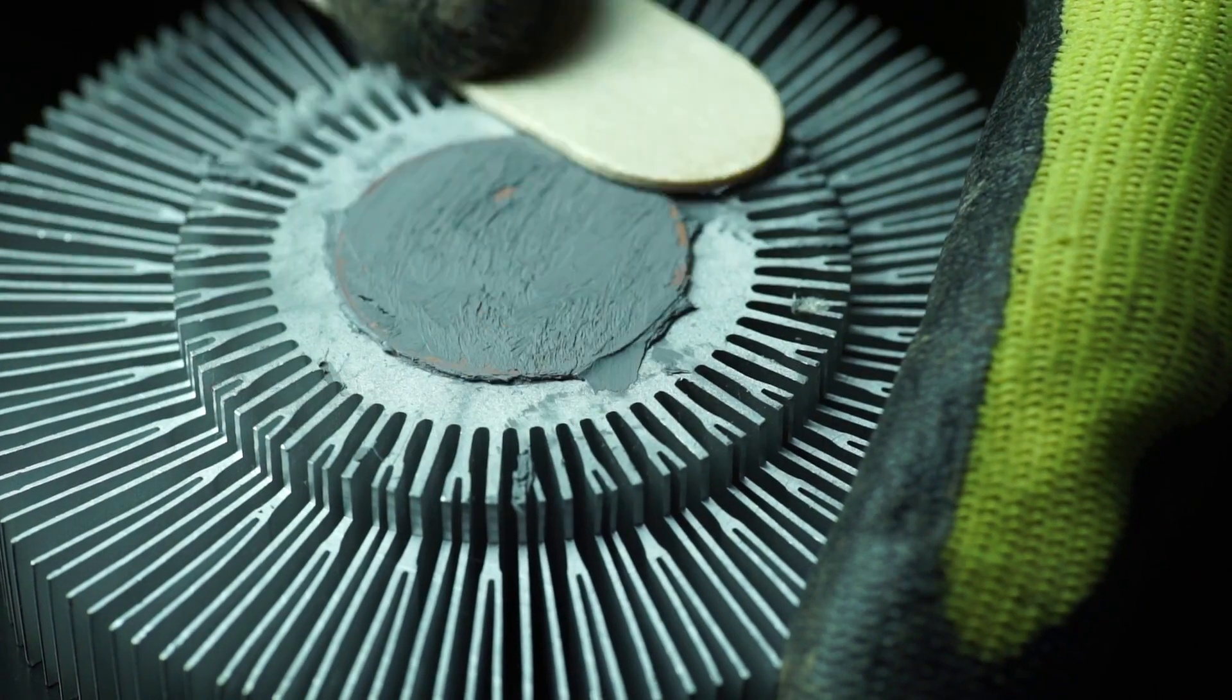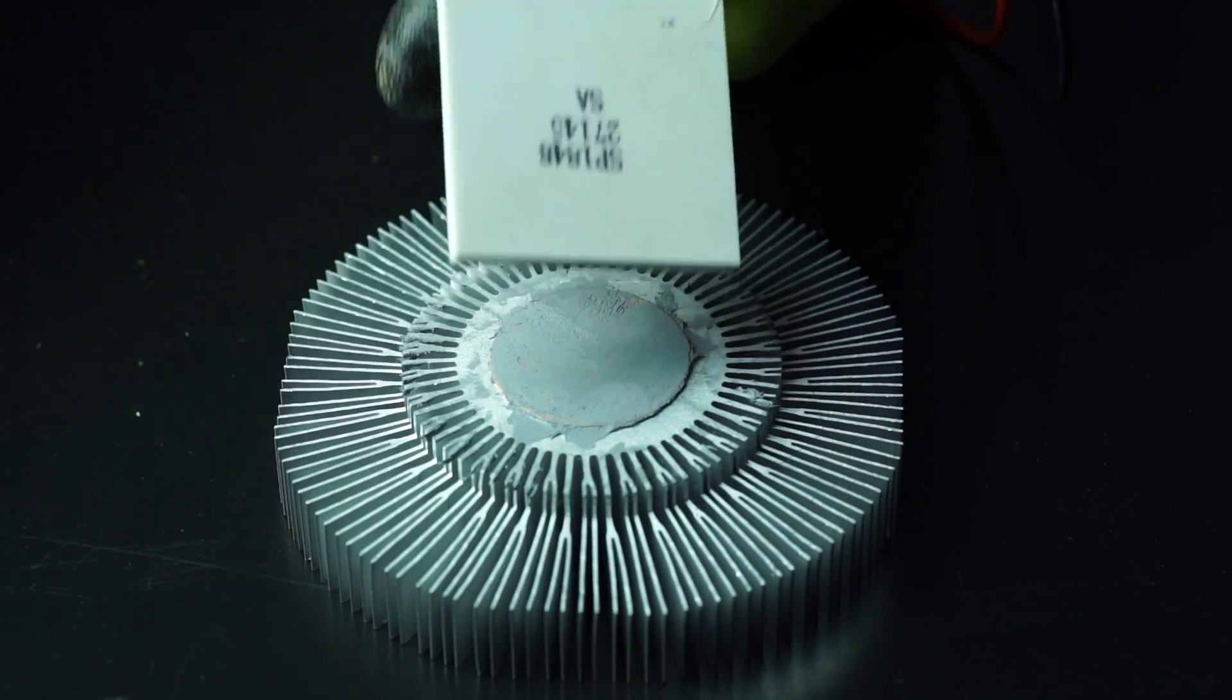Then take the Peltier cell and attach the cold side, that one with the writing, onto the bigger heat sink.